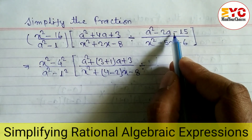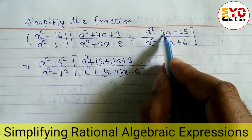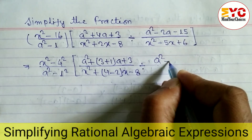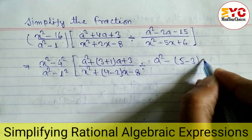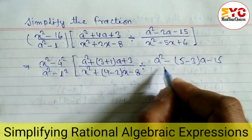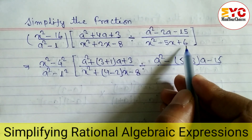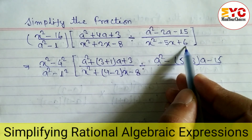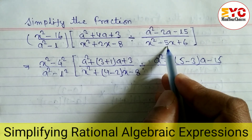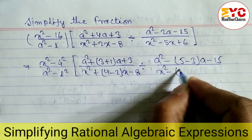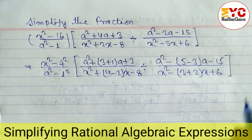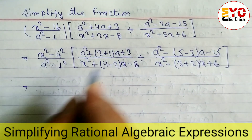While multiplying we get 15 and while subtracting we get 2. The factors are 5 and 3: 5 times 3 is 15, and 5 minus 3 is 2. So we write a squared minus 5 minus 3 times a, giving a squared minus 5a plus 3a minus 15. Divided by: while multiplying we get 6 and while adding we get 5. The factors are 3 and 2, since 3 times 2 is 6 and 3 plus 2 is 5. So we write x squared minus 3 plus 2 times x, giving x squared minus 3x plus 2x plus 6.